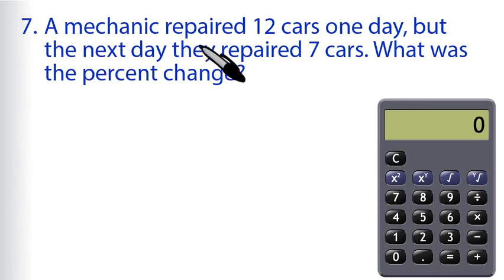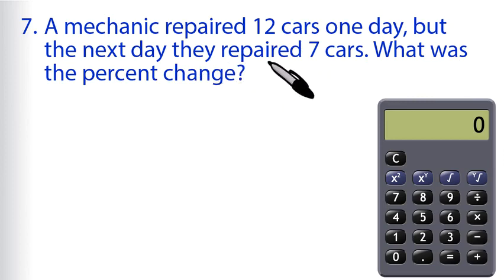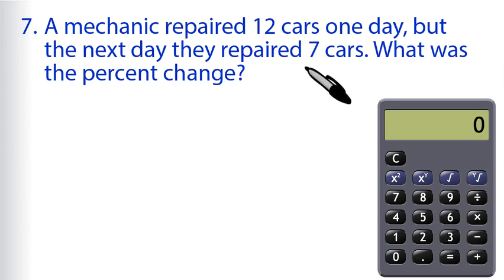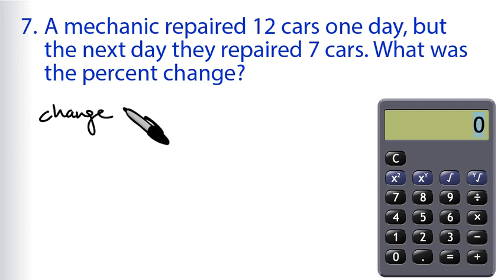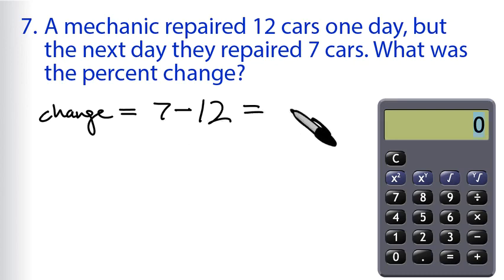For problem 7, a mechanic repaired 12 cars one day, but the next day they repaired 7 cars. What was the percent change? This one might catch you off guard because we're not told the amount more or less — just the total each day. So the first thing we need to do is figure out the actual absolute change: take the new value, 7, and subtract the original value, 12. So 7 minus 12 equals negative 5. The absolute change is negative 5.